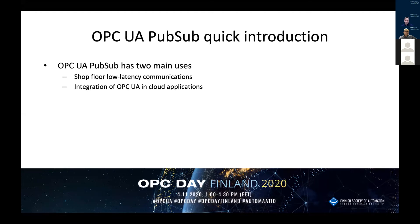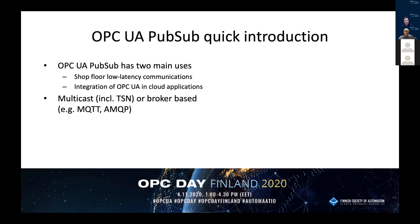Taking a quick introduction to OPC UA PubSub, I can see two main use cases. One is this shop-floor low-latency communication that is quite often talked about and will have more information in a later presentation today. The other important aspect is the integration of OPC UA in cloud applications using MQTT and AMQP. We have two different methods to implement this PubSub: a multicast-based implementation using UDP or Ethernet TSN, or a broker-based approach. There are two formats to transmit the data — UA datagram protocol messages or JSON, which is the typical one used in internet-based communication.